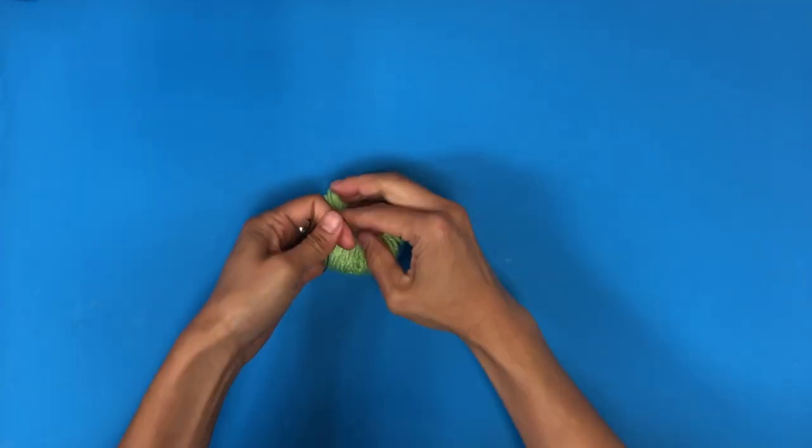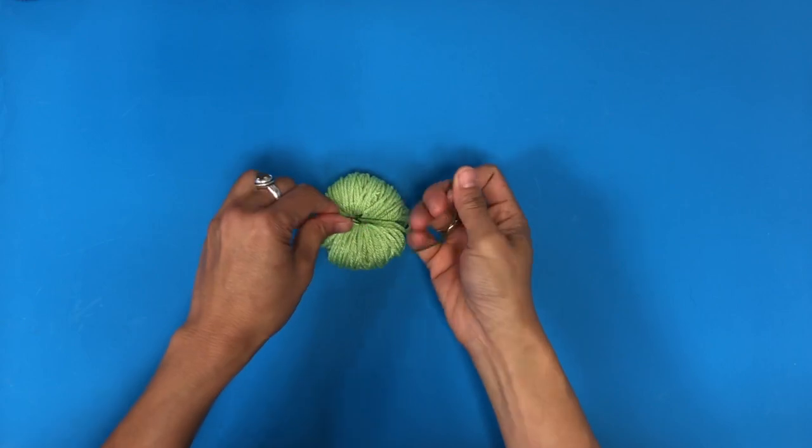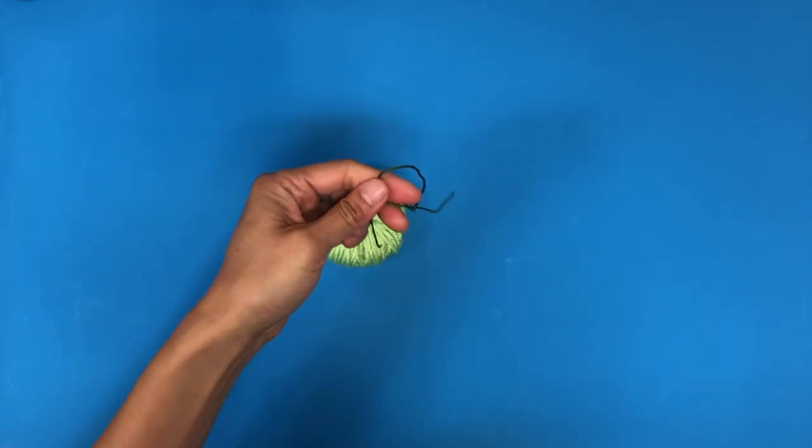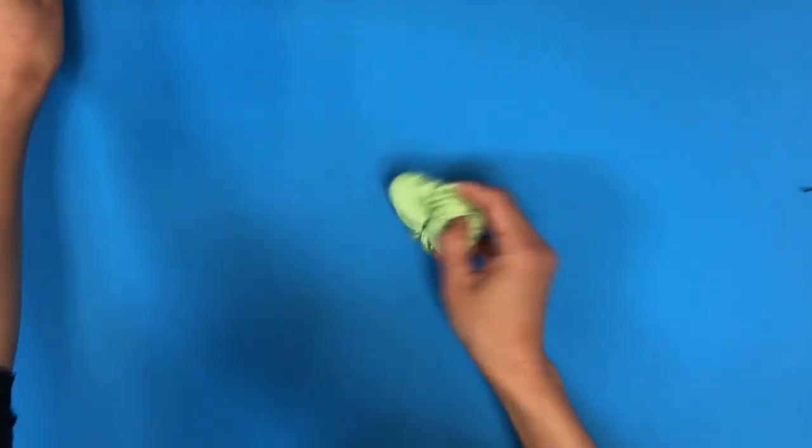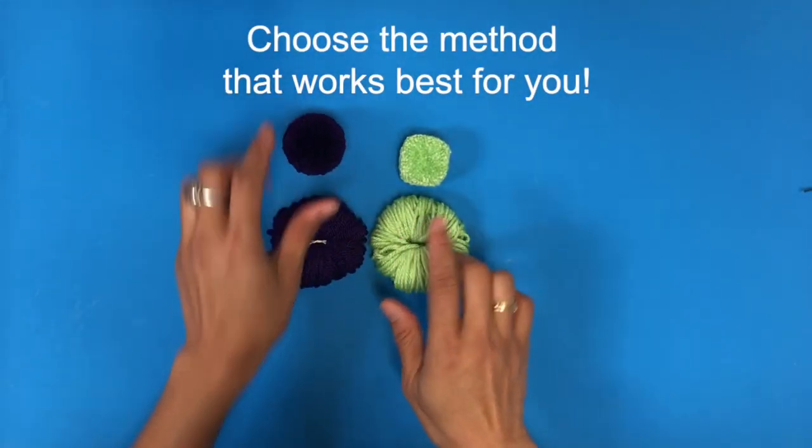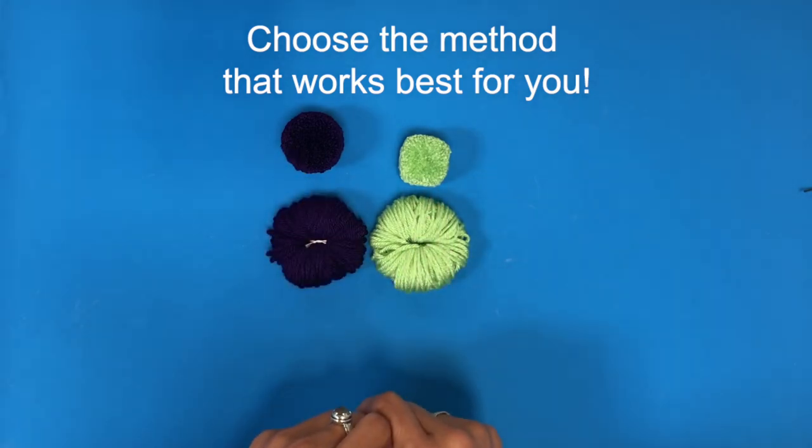Okay, that feels really tight now so I'm going to close with my triple knot and then cut. So now you have your two different methods and then you can start trimming to make your loom pom-pom. Enjoy!